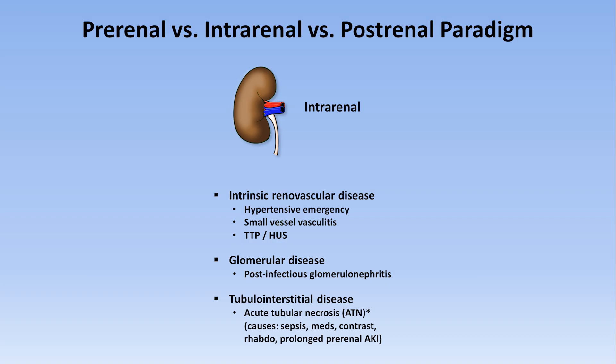This category also includes a condition usually called acute interstitial nephritis, or less commonly allergic interstitial nephritis, most classically caused as a drug side effect. There is no standard range for onset of AKI in drug-induced AIN, but for most drugs the time interval is several days to several weeks after the drug was initiated.